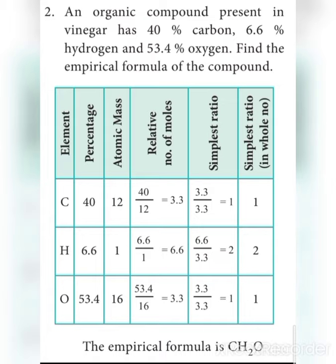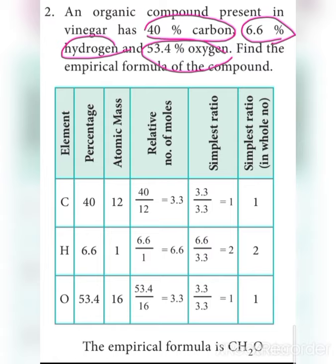What is the percentage of each element? Carbon is 40%, hydrogen is 6.6%, and oxygen is 53.4%. This is the table showing the composition.